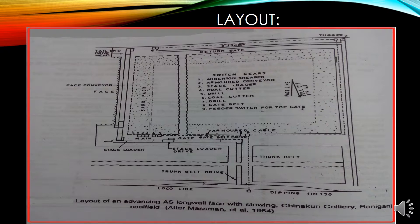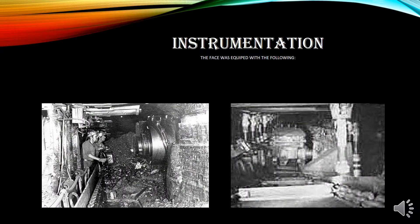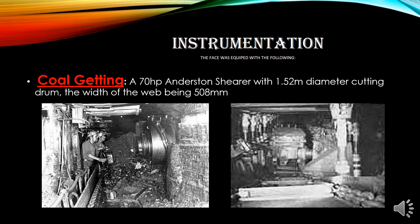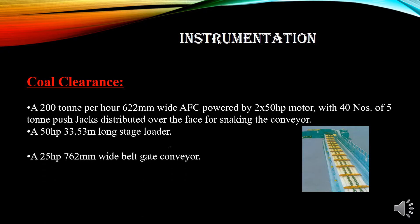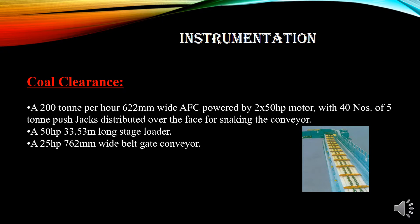The layout shows an advancing method with the goaf area, return gate, and working area. The coal getting machine used was an Anderson Shearer with 1.52 m diameter and a web width of 508 mm, rated at 70 horsepower. For coal clearance: a 200 ton per hour, 622 mm wide armored face conveyor (AFC) powered by a 250 hp motor with 40 push jacks of 5 tons each distributed over the face; a 550 hp, 33.53 m long stage loader; and a 25 hp, 762 mm wide belt gate conveyor.